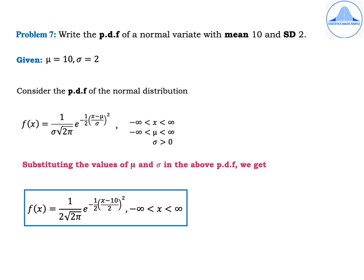f(x) = 1 / (σ√(2π)) · e^(−½((x−μ)/σ)²), where x lies between minus infinity and infinity, mu also lies between minus infinity and infinity, and sigma can take values greater than 0 only.